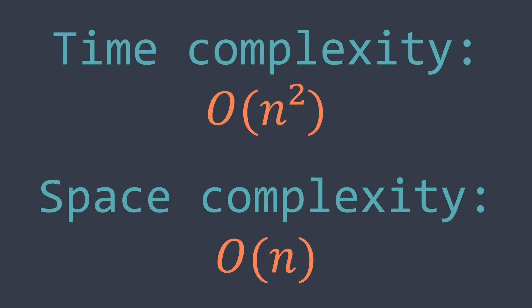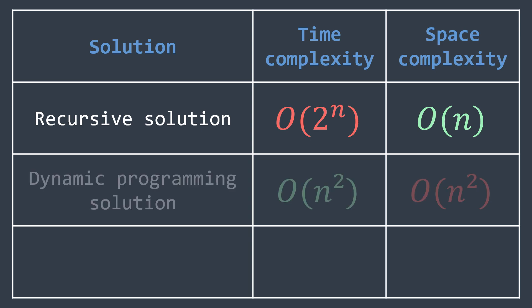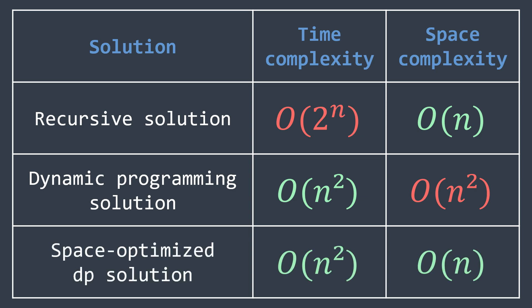In brief, for this problem we've seen three solutions: the recursive solution with O(2^n) time and O(n) space; the classic dynamic programming solution with O(n²) time and O(n²) space; and the space-optimized dynamic programming solution with O(n²) time and O(n) space. This problem was an interesting one to see how dynamic programming works — I hope you understood the process; ask me in the comments if you didn't.